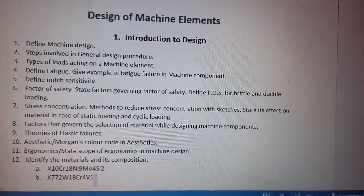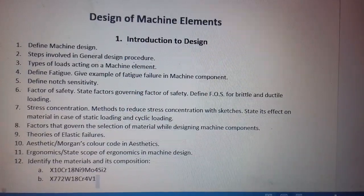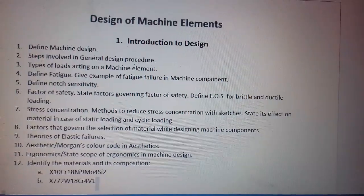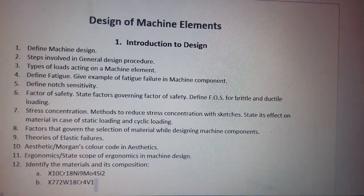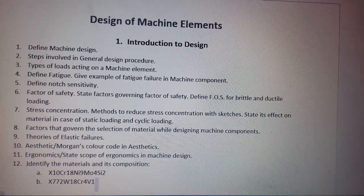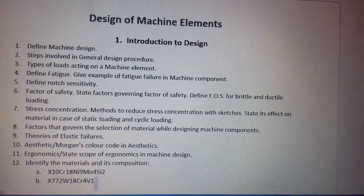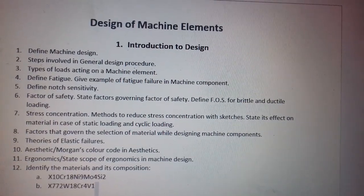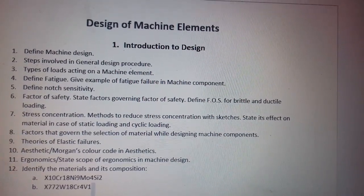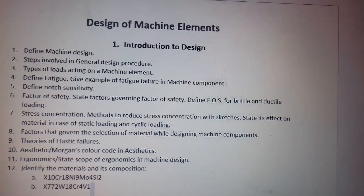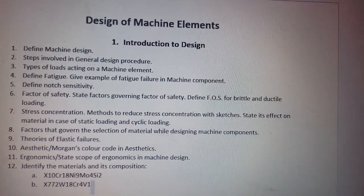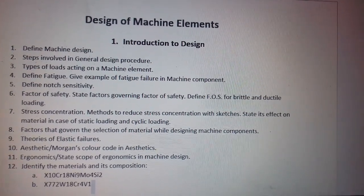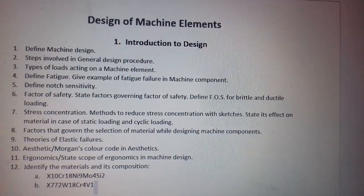Questions also include: stress concentration, methods to reduce stress concentration with sketches, state its effect on material in case of static loading and cyclic loading, factors that govern the selection of material while designing a machine component, theory of elastic failure, aesthetics, Morgan's color code, ergonomics, and state the scope of ergonomics in machine elements, and identify the material and its components. Two examples which were asked in examination are provided here, but different examples can be asked, so if you do it properly with this reference you can solve other examples also.